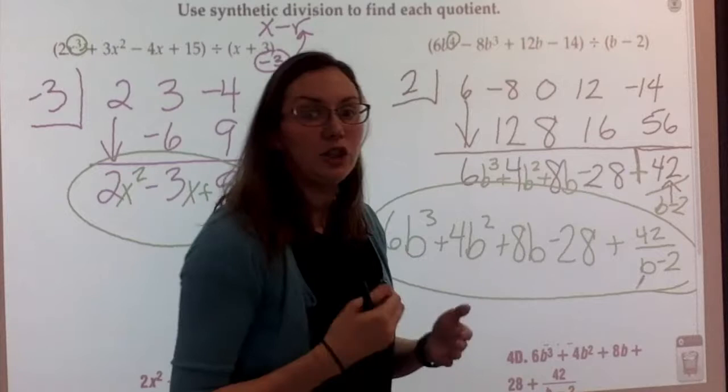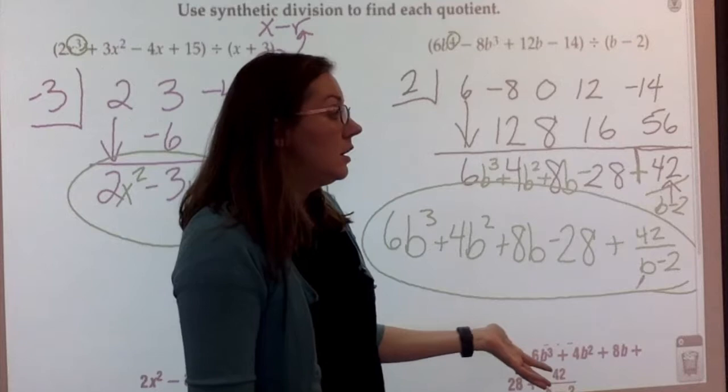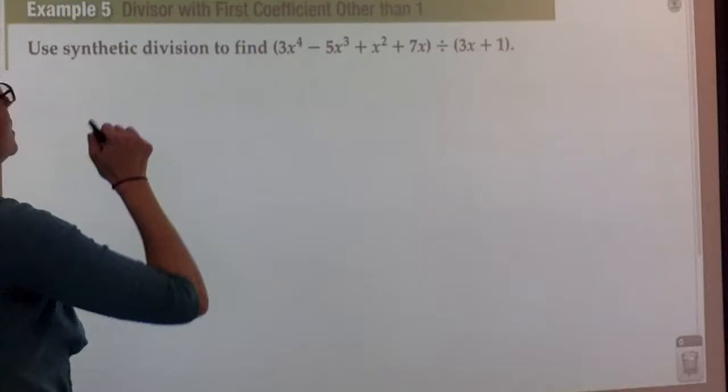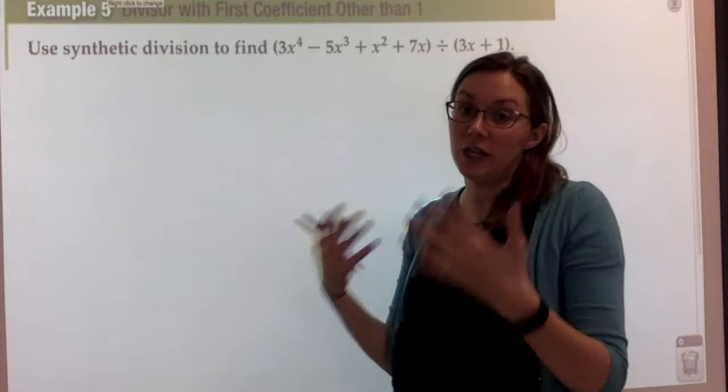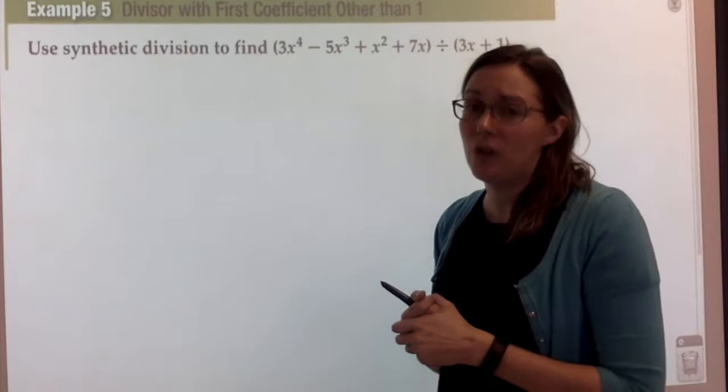Just like with long division, when we have a divisor with a leading coefficient of 1, it's a lot simpler than if we have a leading coefficient that isn't 1. So now we're going to tackle what we do when our leading coefficient is not 1. It's going to involve some fractions, but I still feel there's a lot less guesswork than long division, so this is much more efficient.